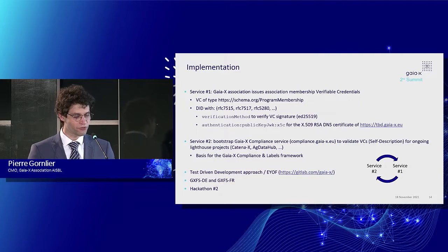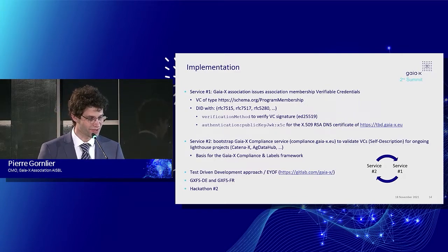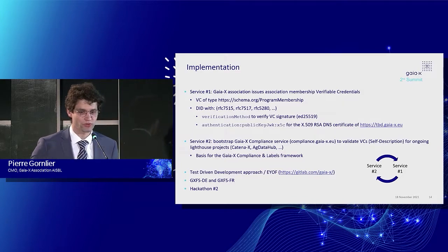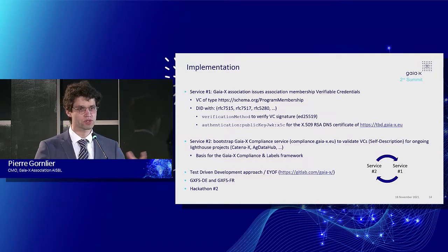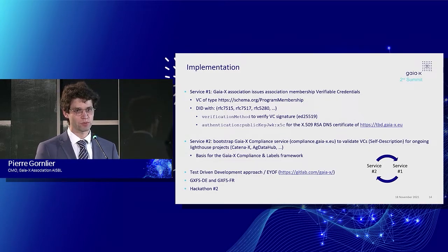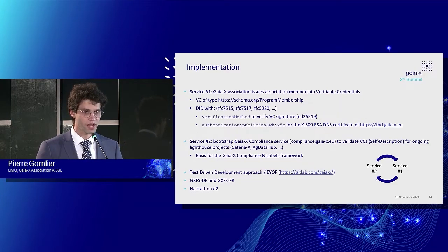Now the fun part: the implementation. We worked a lot on the operating model in the architecture document from September. We have huge expectations, but when we drill down to where we should start, that's always the identity — being able to have two participants, A and B, able to recognize each other's identity schema. So we have a strong focus right now on identity. We want to enable companies and organizations to carry their attributes and their roles from one place to another.